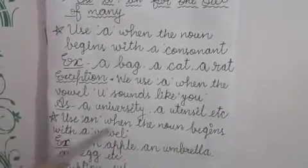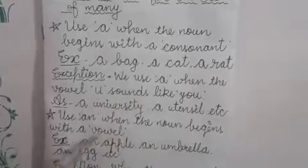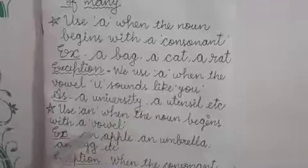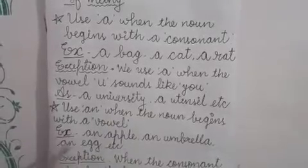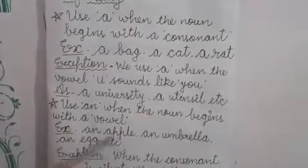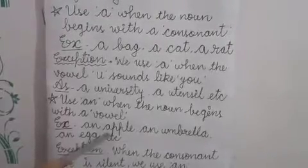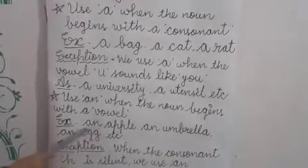We use 'an' when the noun begins with a vowel. Example: an apple. Here the first letter of apple is A, and A is a vowel. That's why we use 'an' here.